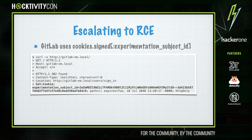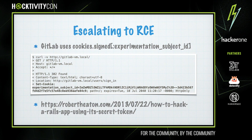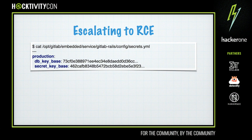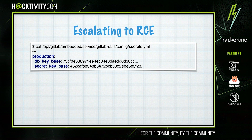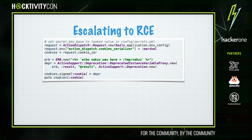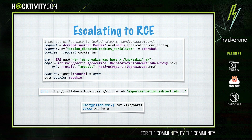Deserialization of untrusted data into Ruby objects is pretty dangerous, especially with a large codebase like Rails where there are lots of gadgets available. To prevent untrusted data, Rails signs cookies with a value from a secret key base so it can tell if data has been tampered with. Combining all of this: we can use the arbitrary file read to leak the secret key base, then use it to sign a malicious Ruby object, and send it to Rails via the experimentation subject ID cookie, which will be deserialized via Marshal due to the hybrid cookie strategy — causing our payload to be executed.